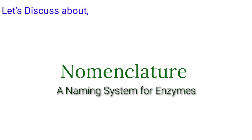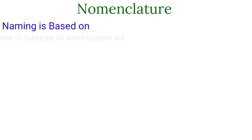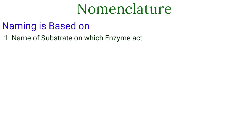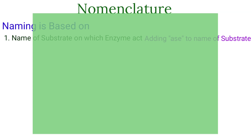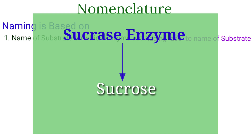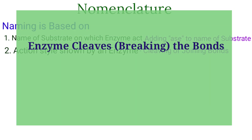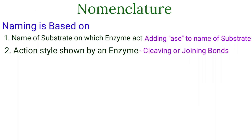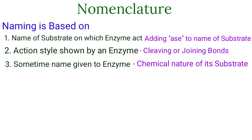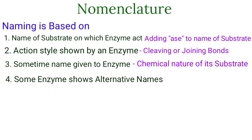Regarding nomenclature and classification of enzymes: naming of any enzyme is done on the basis of the name of the substrate on which it acts, by ending the substrate name with '-ase.' For example, sucrase acts on sucrose. Sometimes naming is based on the activity shown — whether they cleave or join bonds — or on the chemical nature of the substrate. Some enzymes also have alternative names.